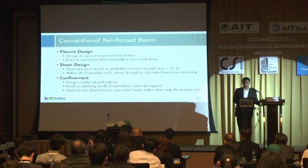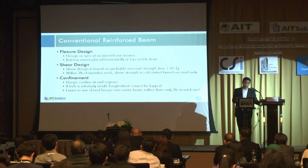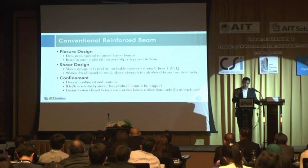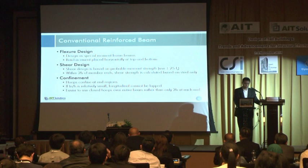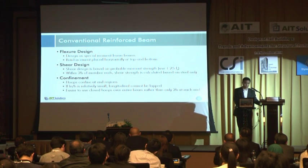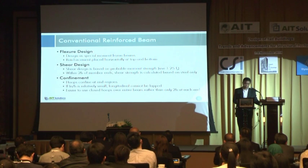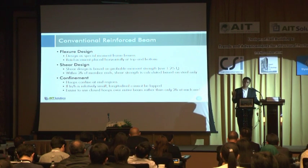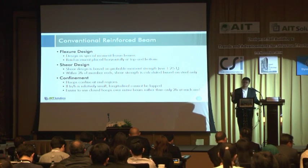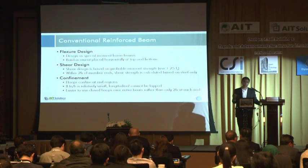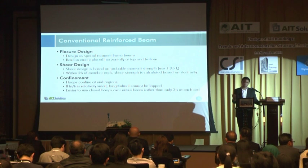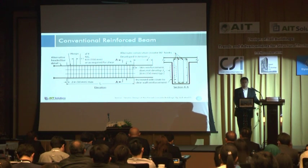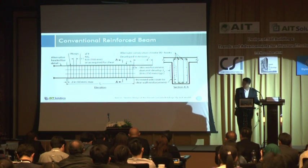For the conventional reinforced coupling beam, we design it as a special moment-resisting frame beam, and shear demand should be checked based on the probable moment shear. Confinement should be provided with hoops at a distance of 2H from the support. Within that 2H from the support, when we calculate the shear capacity of that beam, we should consider only the rebar shear reinforcement strength, not the concrete shear strength. This is the typical detail of the conventional reinforced coupling beam.